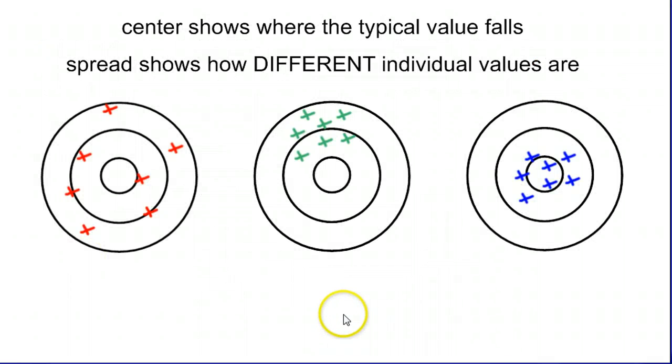The easiest way to think about this is visually. So imagine archery. You're shooting a bunch of arrows at a target.